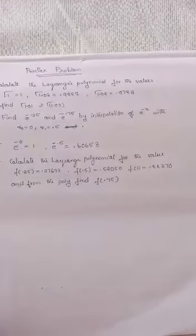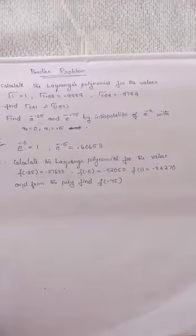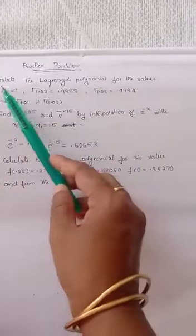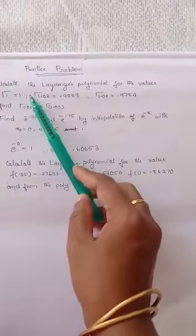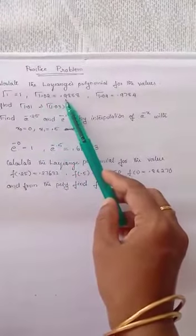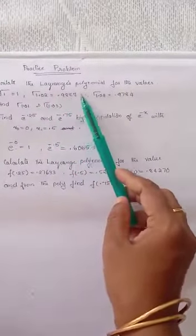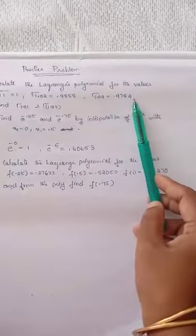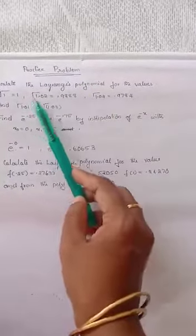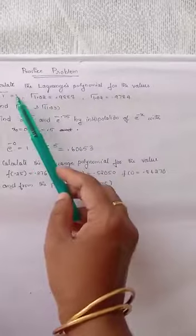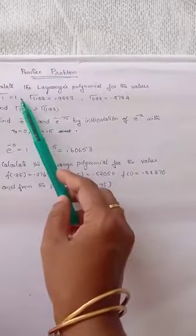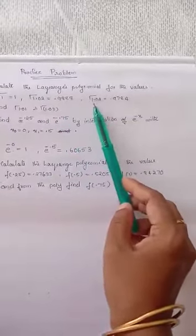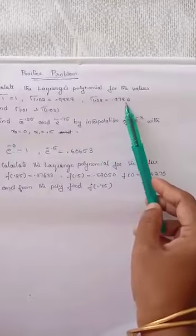Now, three problems are given for practice. First: calculate the Lagrange's polynomial for the values gamma(1) equal to 1, gamma(1.02) equal to 0.9888, gamma(1.04) equal to 0.9784. These can be written as ordered pairs: (1, 1), (1.02, 0.9888), (1.04, 0.9784), and then use Lagrange's polynomial.